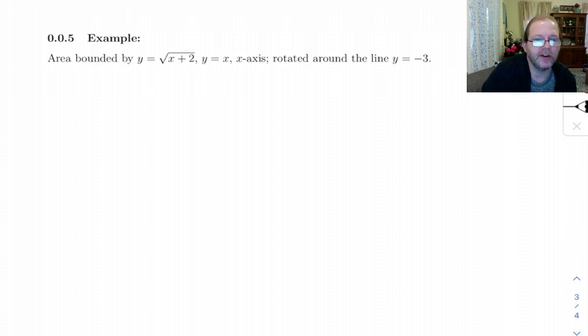Example 5 asks us to take this area and rotate it around the line y equals negative 3. Y equals negative 3 is our axis of rotation, so when we draw this, we need to leave a good bit of space underneath the axis.